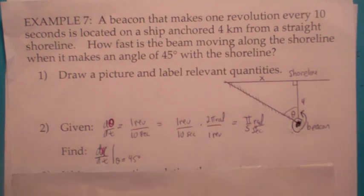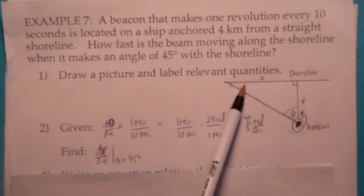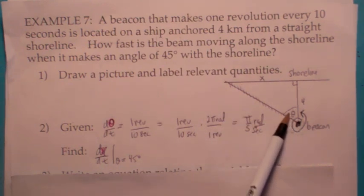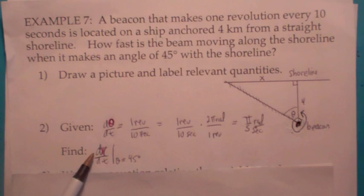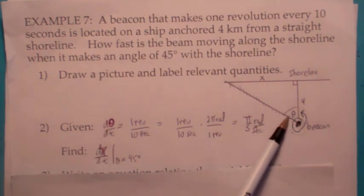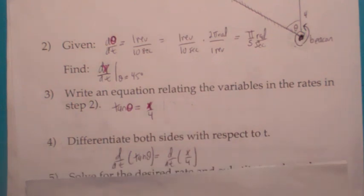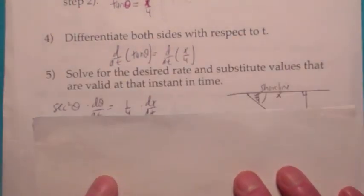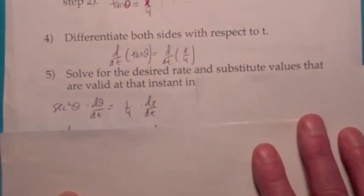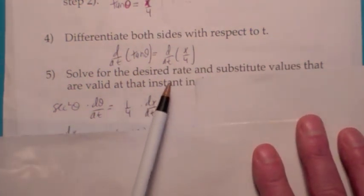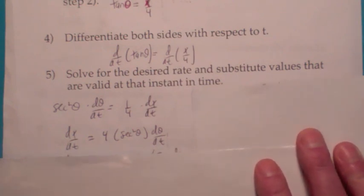And they want us to find dx dt when theta equals 45. Actually technically it's when this angle equals 45. But when this angle is 45, this angle will be 45 also. So what's the function that relates x and theta? It's a trig function, the tangent again. Tangent of theta equals x over 4. Now when you differentiate both sides with respect to t, don't forget you're going to use the chain rule here. The derivative of the left side becomes secant squared theta d theta dt, derivative of the right side is 1 fourth times dx dt. Now we're solving for dx dt, so you multiply both sides by 4.